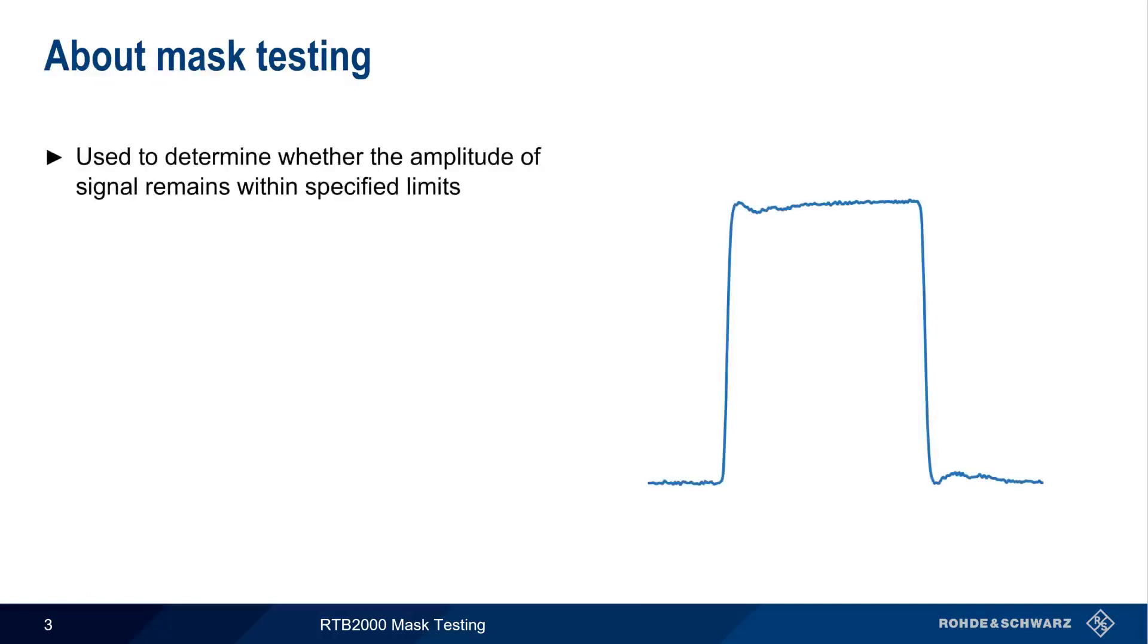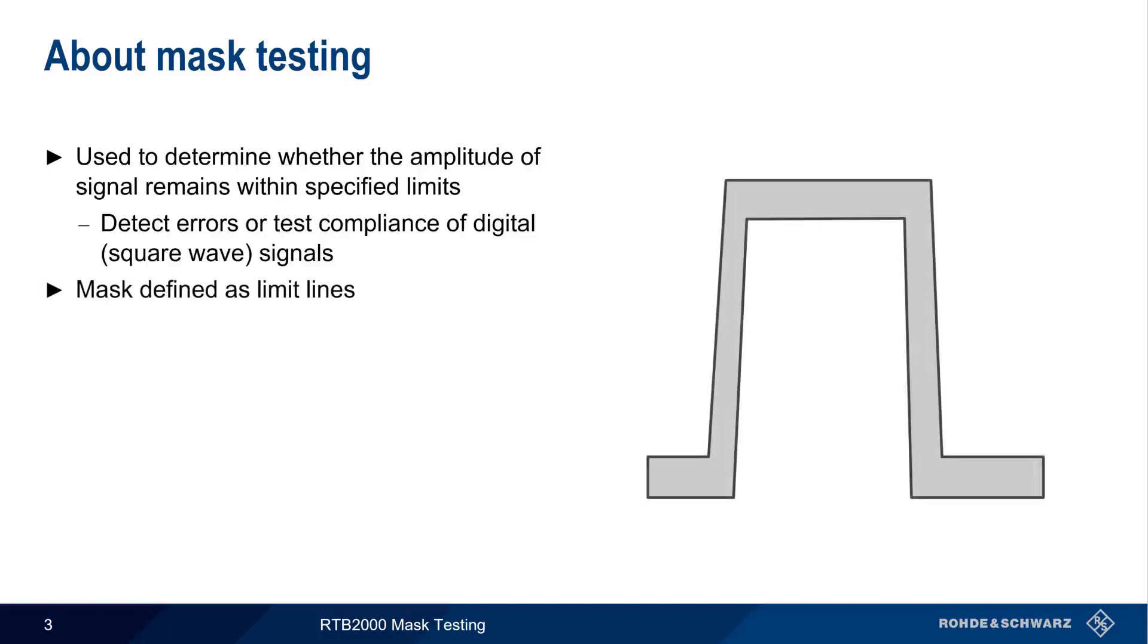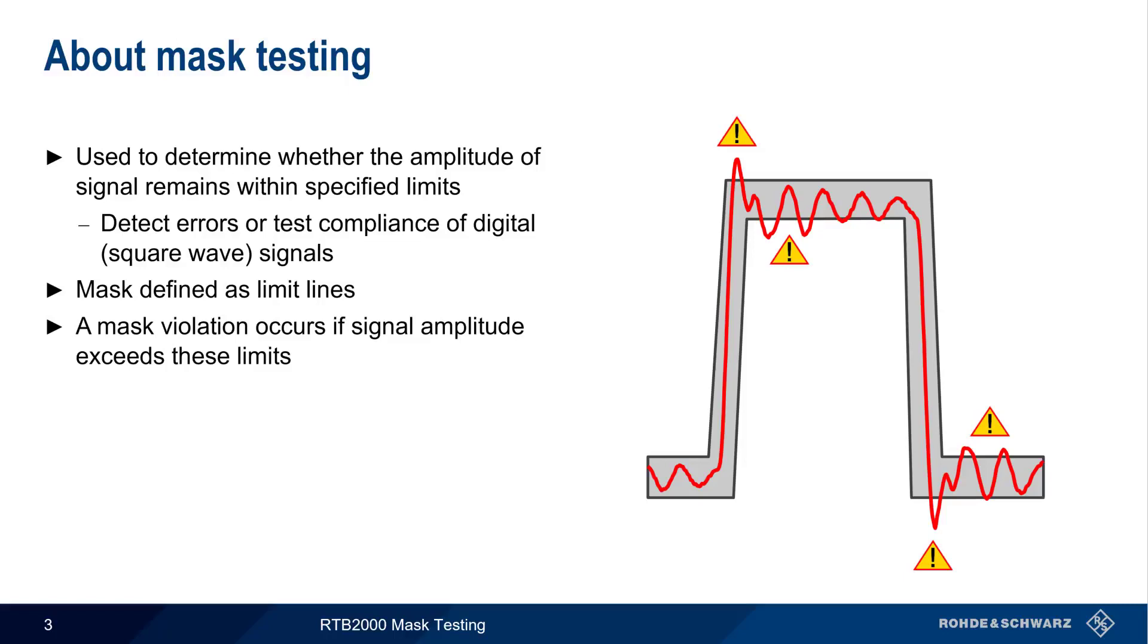Mask testing is used to determine if the amplitude of a signal remains within user-specified limits. This is most often done to detect errors or to test compliance of digital, that is, square-wave-type signals. Masks are defined using limit lines, and a mask violation occurs if the signal crosses any of these limits.